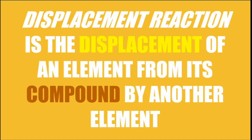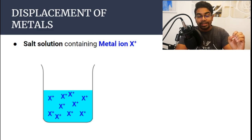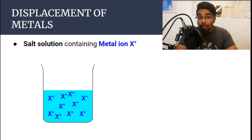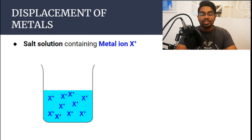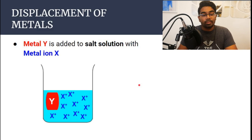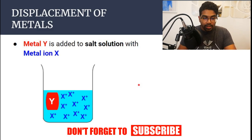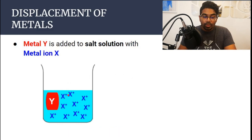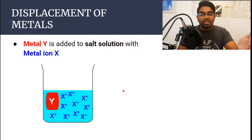Before we begin, there's one question we need to ask: what is a displacement reaction? Displacement is when we have one element that kicks out another element from a compound. Let's say we have a salt solution containing metal ion X — that means it's a salt solution that has metal ion X as the cation, so in the solution we have ion X+. What happens if we add a metal Y? Metal Y will kick out metal X from the solution. This is what we call displacement — metal Y will displace metal X.